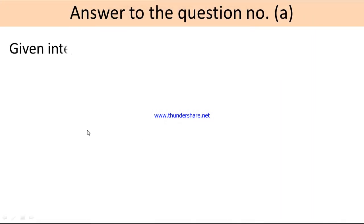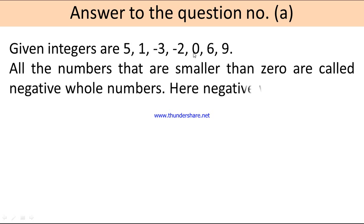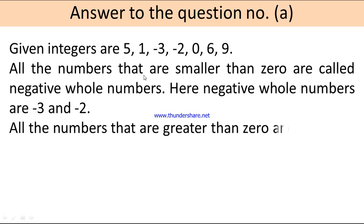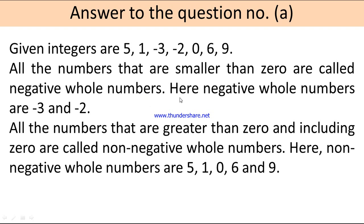Answer to question number A. The given integers are 5, 1, minus 3, minus 2, 0, 6, 9. All numbers smaller than 0 are called negative whole numbers. Here, the negative whole numbers are minus 3 and minus 2. All numbers greater than or equal to 0 are called non-negative whole numbers. Here, the non-negative whole numbers are 5, 1, 0, 6, and 9.